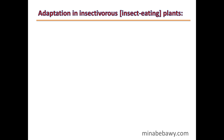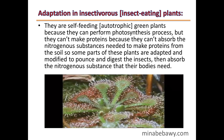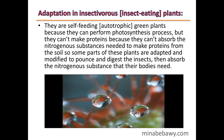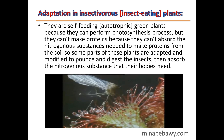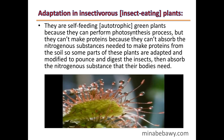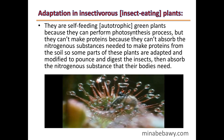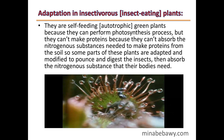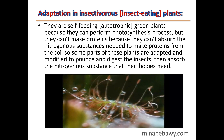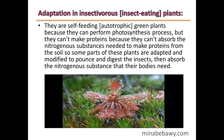Adaptation in insectivorous plants (insect-eating plants): These are autotrophic green plants that can perform photosynthesis, but they cannot make proteins because they cannot absorb the nitrogenous substances needed from the soil. So some parts of these plants are adapted and modified to trap and digest insects, then absorb the nitrogenous substances their bodies need.